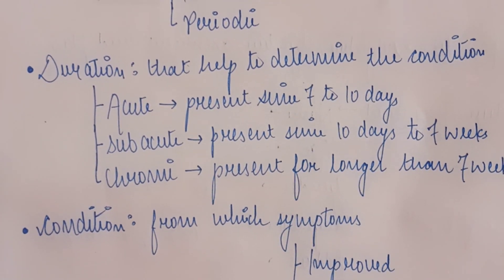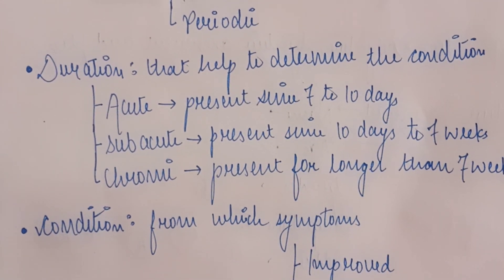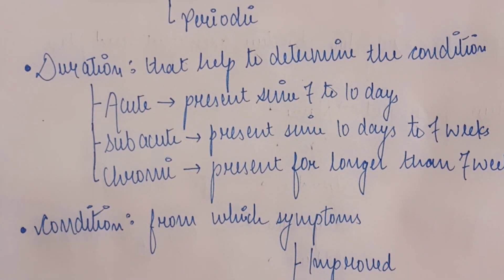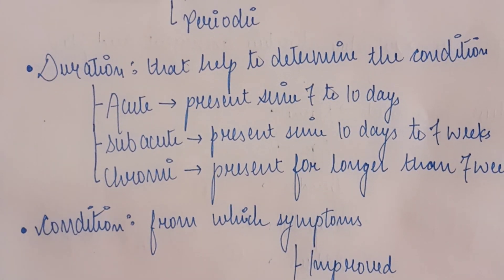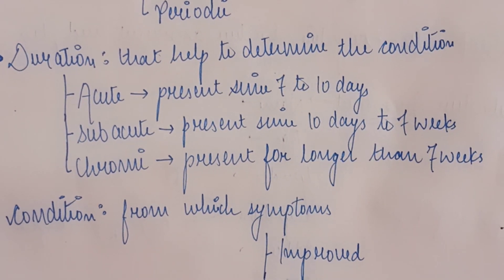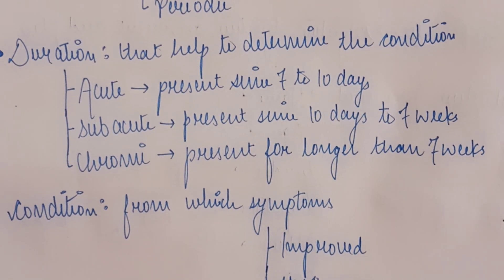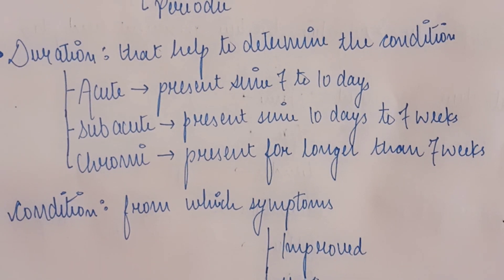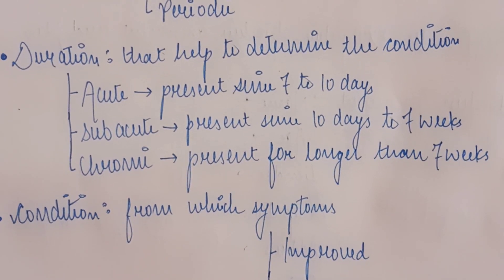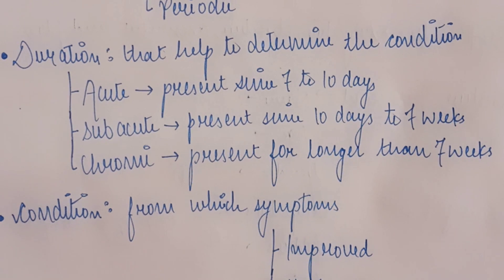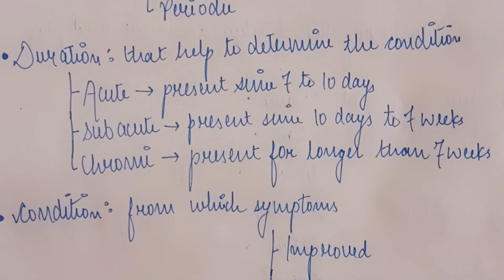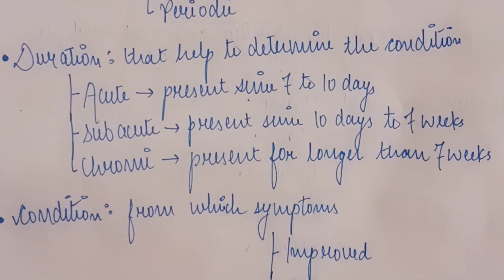The sub-acute condition is more than ten days up to seven weeks. If the pain persists for one month or two months, that comes under sub-acute. The chronic condition is persisting for a prolonged period of time — more than seven weeks. If the patient has pain for five years or six months, that comes under the chronic condition. If the pain is from the last one week, ten days, four days, or five days, that is the acute condition.